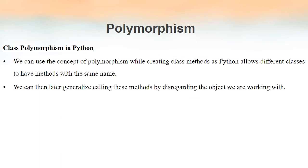So far we saw how to implement polymorphism by means of operators as well as functions. Python also allows polymorphism in classes. To implement polymorphism in classes, we create more than one class having the same method names. If you have a class with methods named method1 and method2, you can create another class with methods of the same names. So now we have more than one class in which we have methods with the same name — same method names in different classes. That is how we implement polymorphism in case of classes.